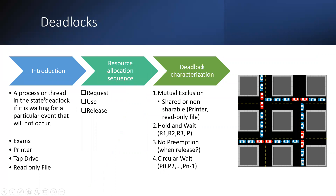So when are we actually in a deadlock? When is deadlock there? If there is any process or thread, when will it be in a deadlock state? Simply, if a process is waiting for a particular event to be performed, that waiting situation is known as the deadlock state. A process is in the deadlock state if it is waiting for a particular event to occur.